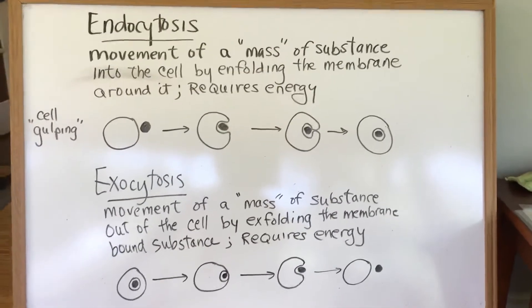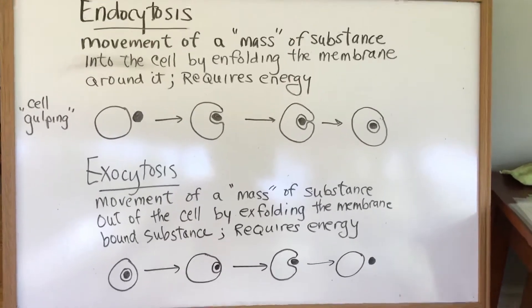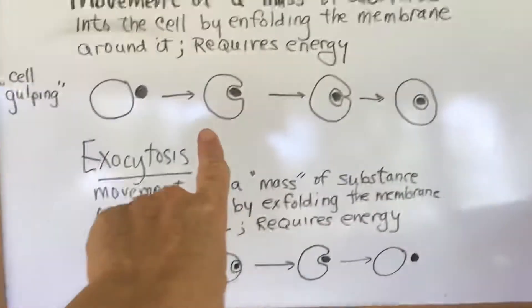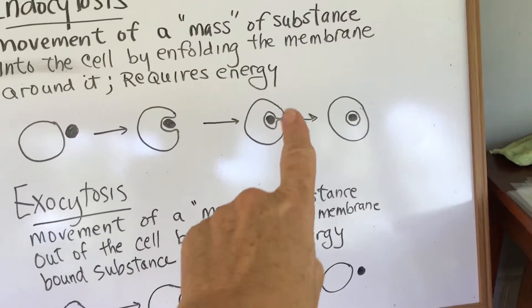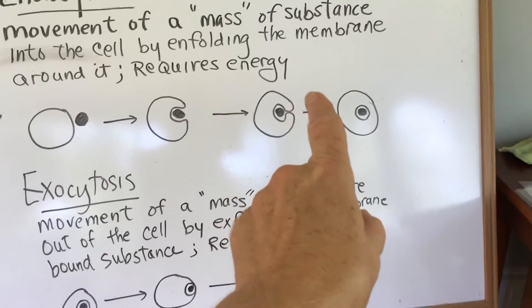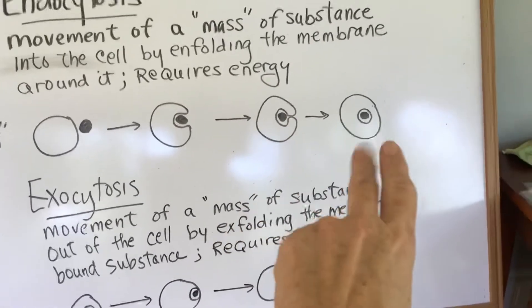But if you have a large cell it can actually infold the membrane here and fold itself around it. And because these membranes once they touch can coalesce, that is that membrane can become that one and that membrane can become that.